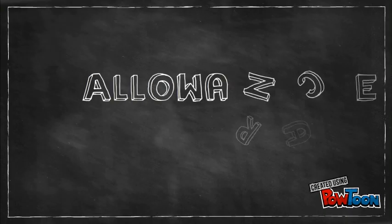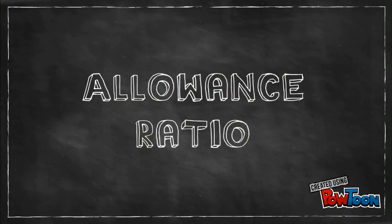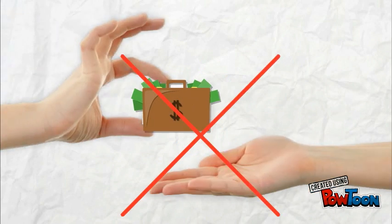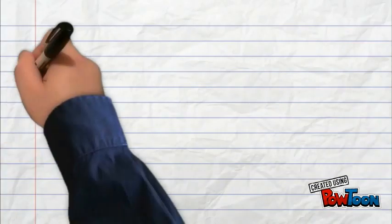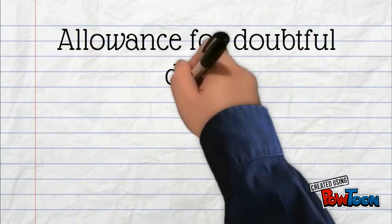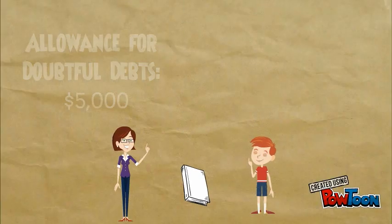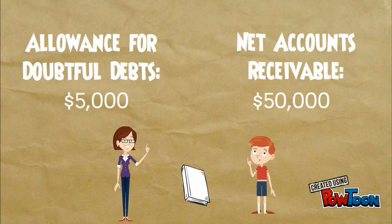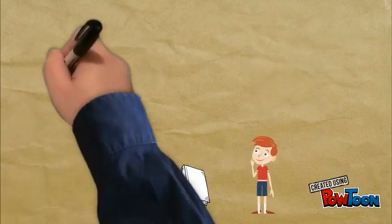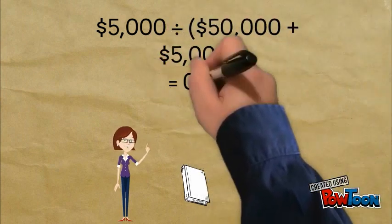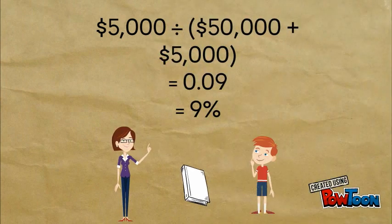Lastly, the allowance ratio is used to compare the allowance account to gross accounts receivable. This determines the percentage of receivables that are expected to be uncollectible in the future. To calculate the allowance ratio, we divide the allowance for doubtful debts by gross receivables. For instance, for the year ending December 2016, Educare had the following figures on their financial statements. Substitute these figures into the formula and we determine that 9% of their receivables are expected to be uncollectible.